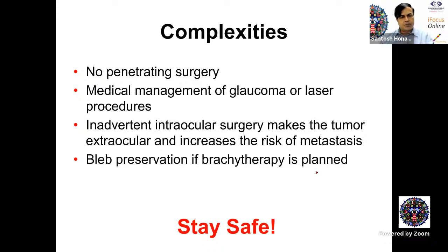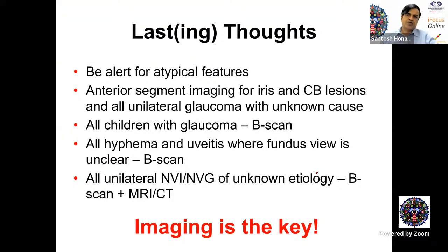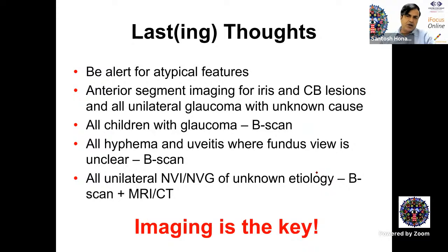If brachytherapy is planned in a patient with choroidal hemangioma, a bleb-preservation approach is used — conjunctival peritomy in a different area to place the plaque. Key takeaways: be alert to atypical features in glaucoma patients. Anterior segment imaging is mandatory for iris and ciliary body lesions and for all unilateral glaucoma of unknown cause. All children with glaucoma should have a B-scan unless the fundus is clearly visible. All hyphema and uveitis with unclear fundus view need B-scan. All unilateral NVI of unknown etiology requires imaging.